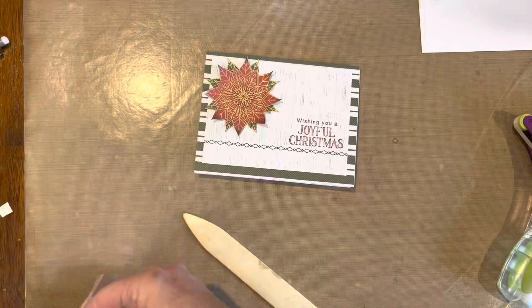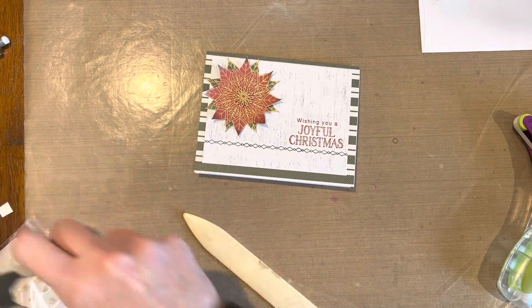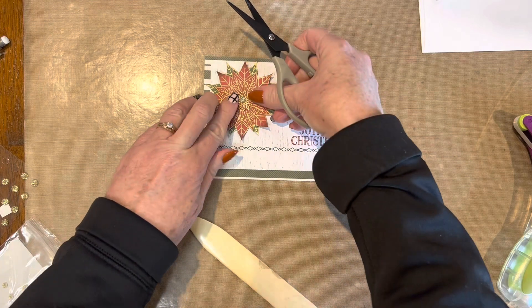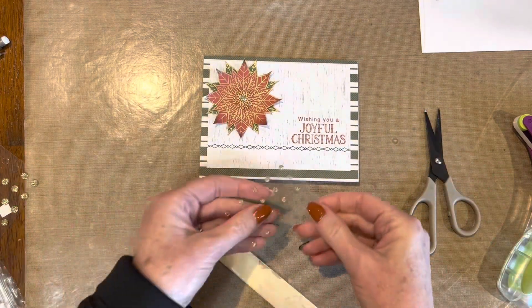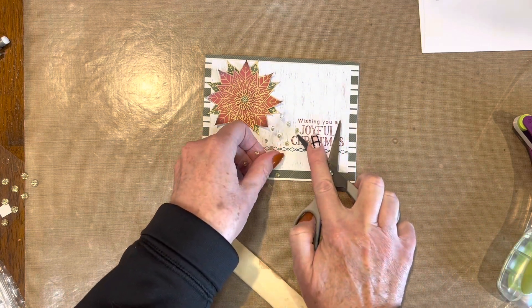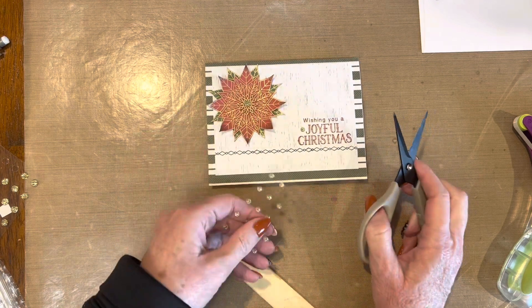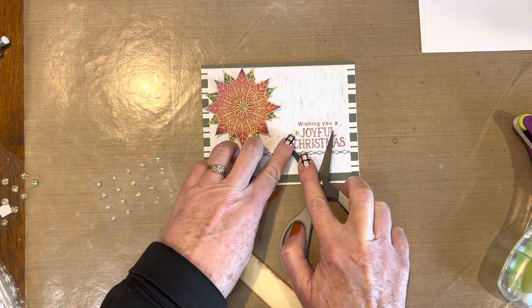Then I'm going to come in with a large gold glitter gem and pop that in the center of the flower. And then I'm just going to put a couple smaller ones in there because we just like to do things in threes for embellishments. So I slid those in right beside the sentiment, the words joyful and Christmas. They're already larger words and this just kind of accented them a little bit more.